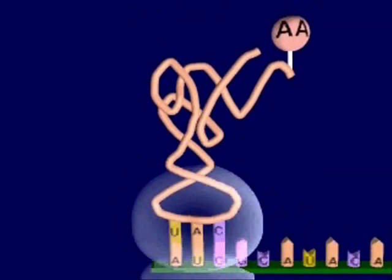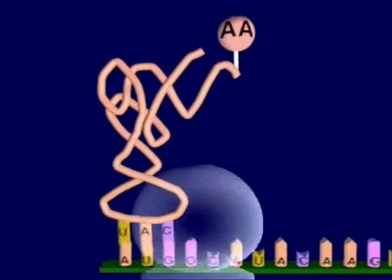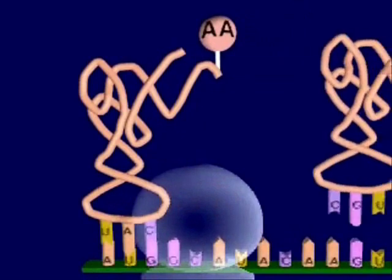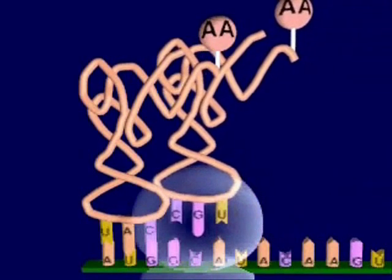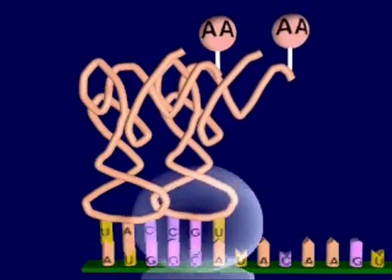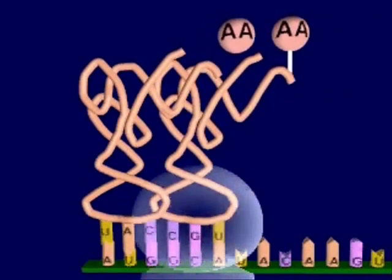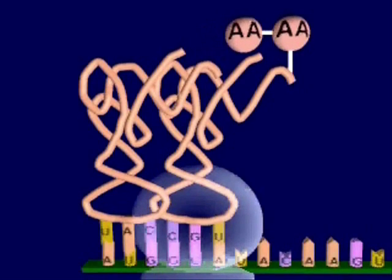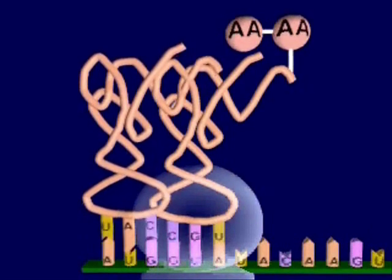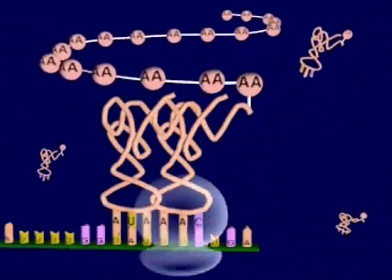The messenger RNA slides along the ribosome to the next codon, where a new transfer RNA molecule pairs with the amino acid codon. The two joining amino acids then become joined by a peptide bond, and the first transfer RNA molecule is released by mRNA. A chain of amino acids is formed until the ribosome reaches the stop codon on the mRNA strand.